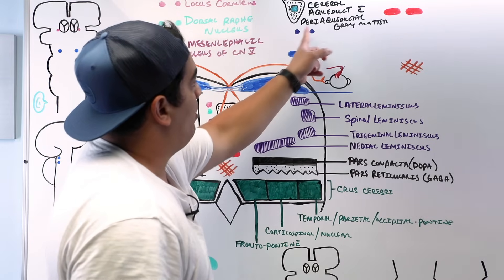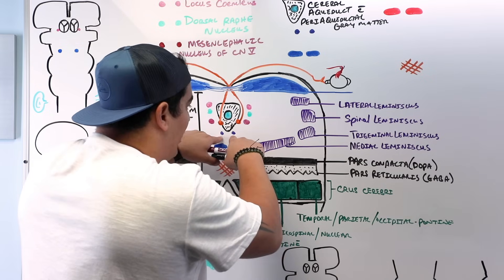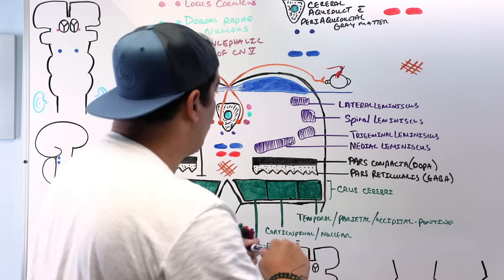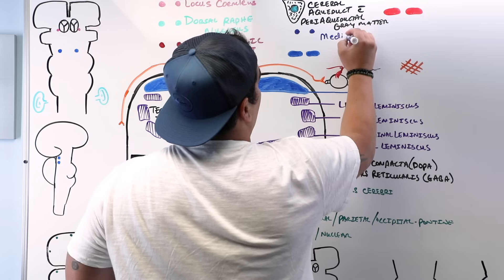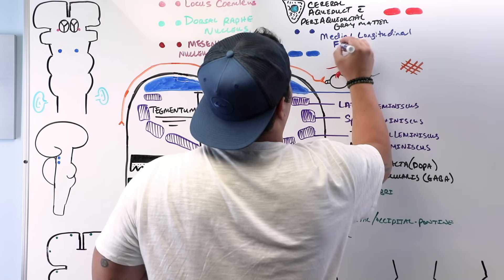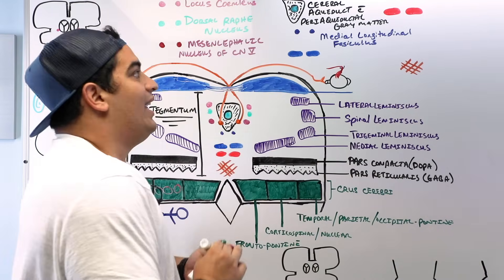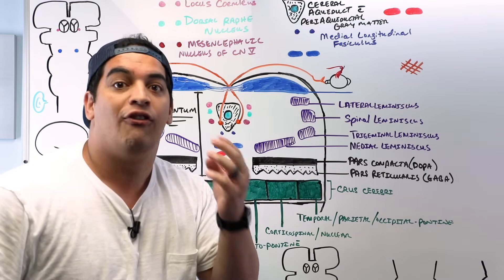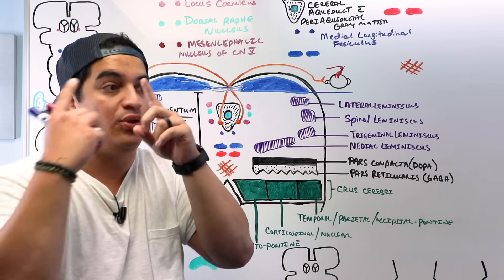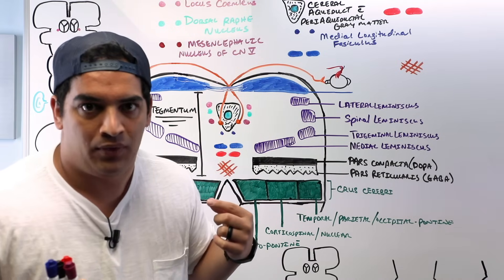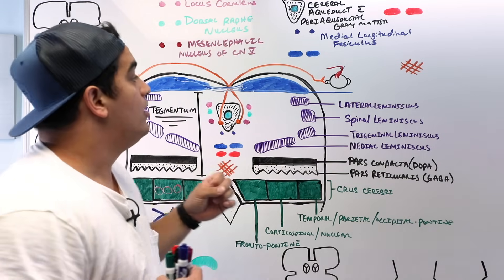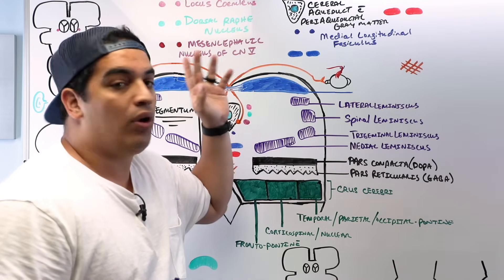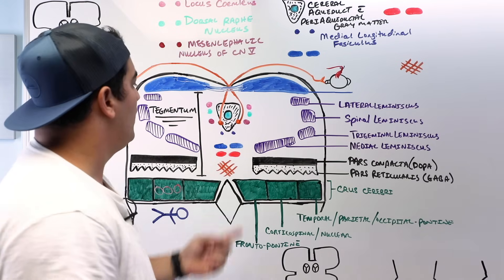Just anterior to the periaqueductal gray matter are the blue fibers called the medial longitudinal fasciculus (MLF). The MLF connects the vestibular nuclei at the pons-medulla junction to cranial nerve nuclei III, IV, and VI, and is responsible for coordinating proper eye movements based on vestibular sensations — such as when we rotate our head left or right.